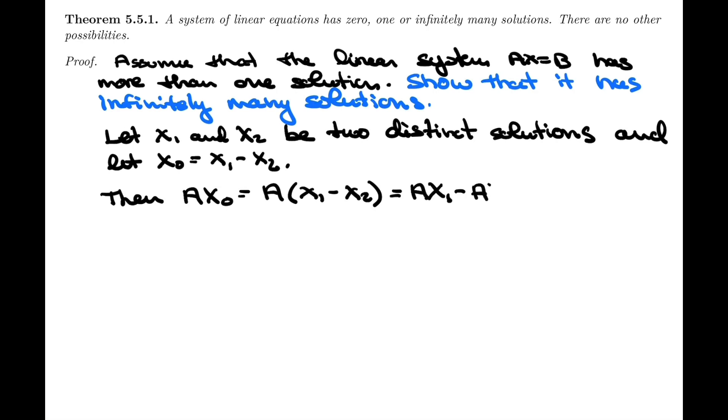But of course, matrix multiplication is distributive, we know that. So AX1 minus AX2. And we know that AX1 is B because X1 is the solution of the system, so AX1 equals B. And the same way we know that AX2 is B. So B minus B equals zero matrix. And therefore, if you look at, read this from left to right, AX0 equals zero.